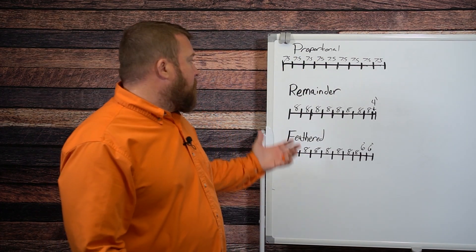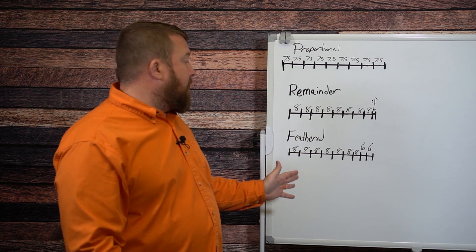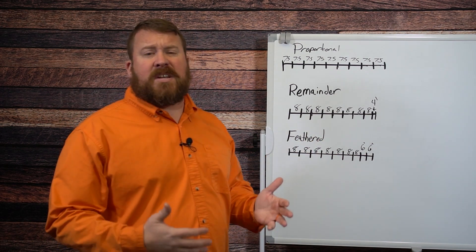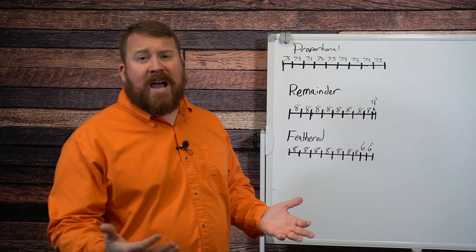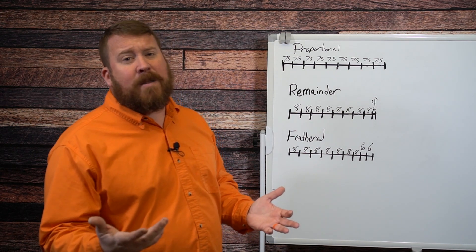Sometimes contractors prefer the remainder or the feathered method simply because over a long line of fence, you don't have to cut every single section. When you're doing a fence such as ornamental iron, aluminum, or vinyl, that can really get labor intensive and end up costing the customer quite a bit.